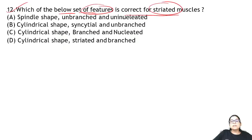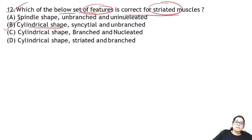Zoology Question 12: which set of features is correct for striated muscle? Striated muscle is cylindrical in shape, syncytial, and unbranched.